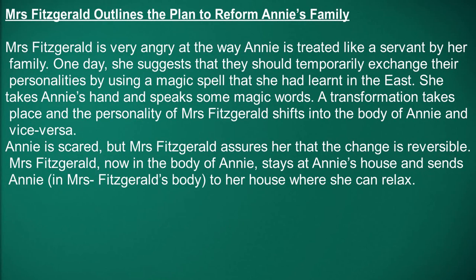The second subdivision is when Mrs. Fitzgerald outlines the plan to reform Annie's family. Mrs. Fitzgerald is very angry at the way Annie is treated like a servant by her family. She suggests that they should temporarily exchange their personalities by using a magic spell she had learned in the East. She takes Annie's hand and speaks some magic words. A transformation takes place and the personality of Mrs. Fitzgerald shifts into the body of Annie and vice versa. Annie is scared, but Mrs. Fitzgerald assures her that the change is reversible. Mrs. Fitzgerald, now in the body of Annie, stays at Annie's house and sends Annie in Mrs. Fitzgerald's body to her house, where she can relax.